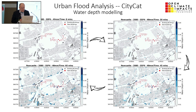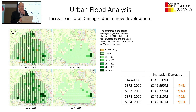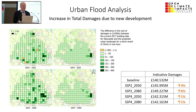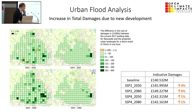Moving on, this is purely with socioeconomic change — the increase in damages due to new development, assuming the climate in these runs is stationary. Looking at SSP2 and SSP4 in 2050 and 2080, the effects are in the range of 1% to 6% depending on the scenario.